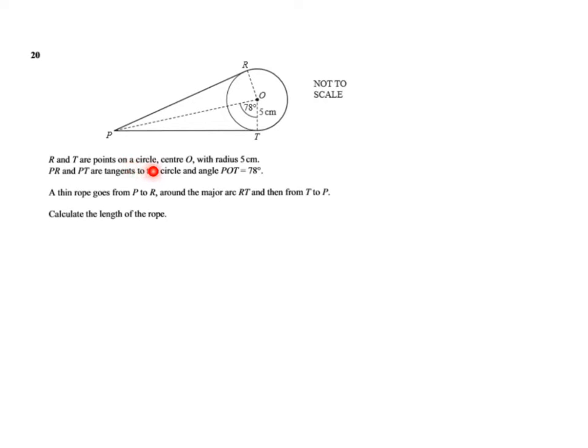They say R and T are points on the circle, the center is O and the radius is 5 cm. Before we answer the question let's have a proper look at what is going on. R and T lie on the circumference of this circle, center O, radius is 5.